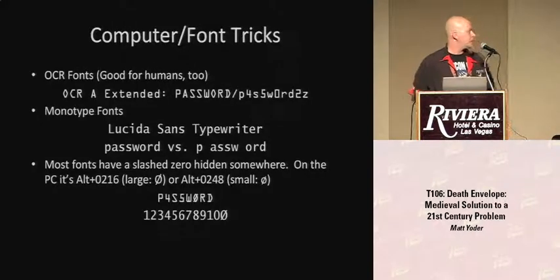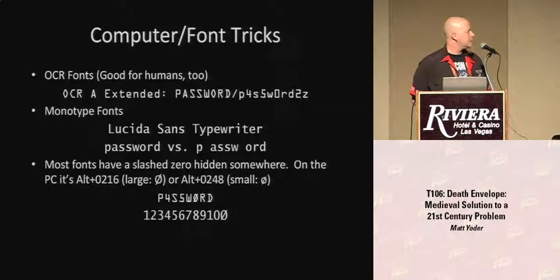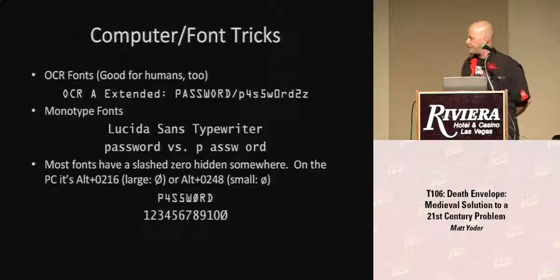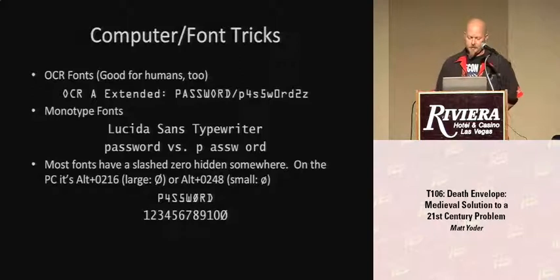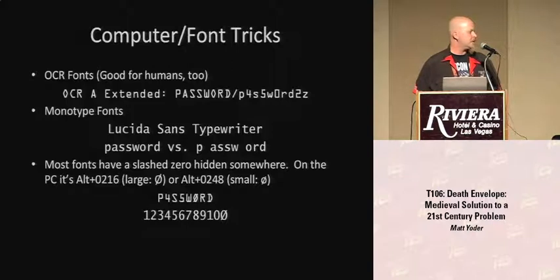By the same token, some of these tricks you want to use if you're creating your envelope on the computer. OCR fonts are freely available, and in the same respect that a computer can read them effectively, a human can read them as well. Monotype fonts show spaces — frequently if you're giving a passphrase you're going to have spaces, and a lot of operating systems will take a space as part of a password now, so you want that to be obvious. And here again, slash zeros — most fonts are going to have a slash zero available.